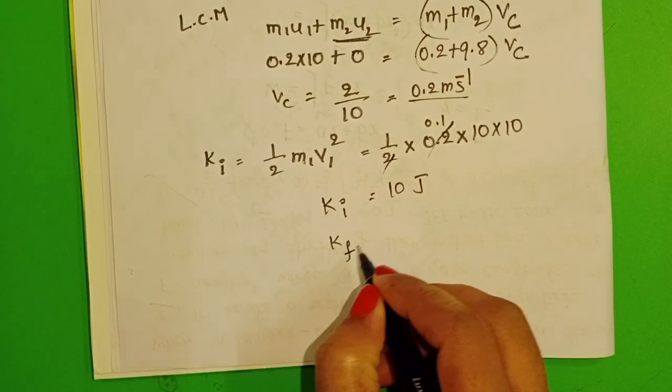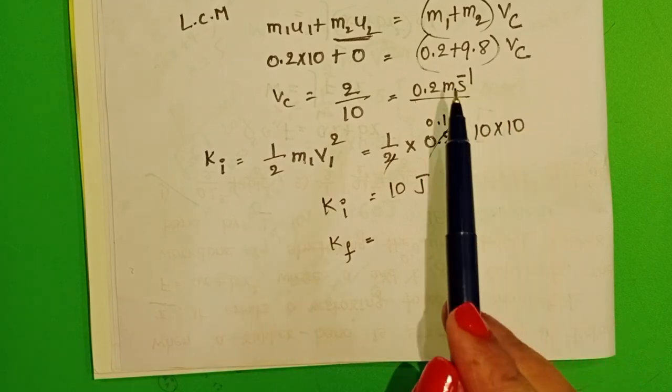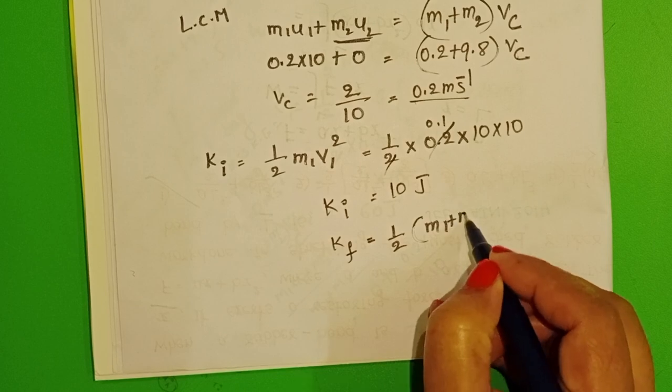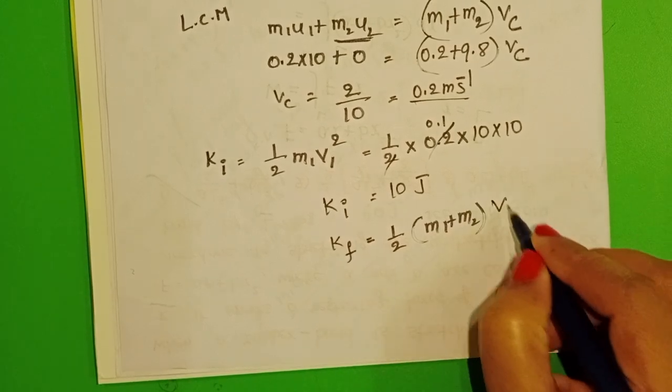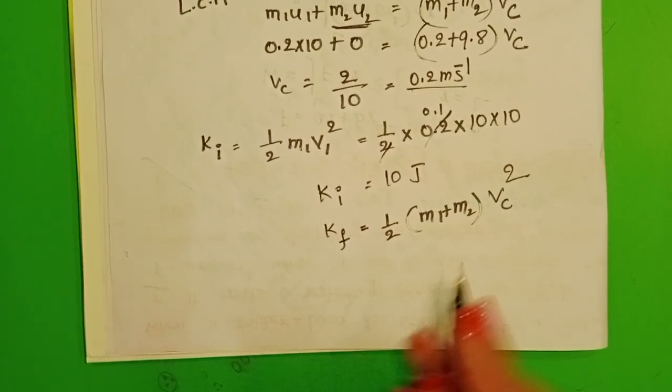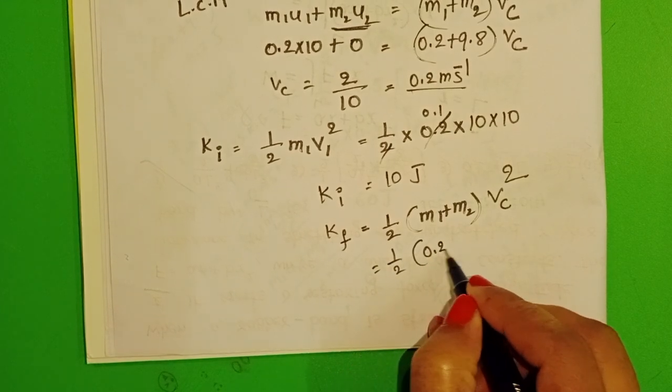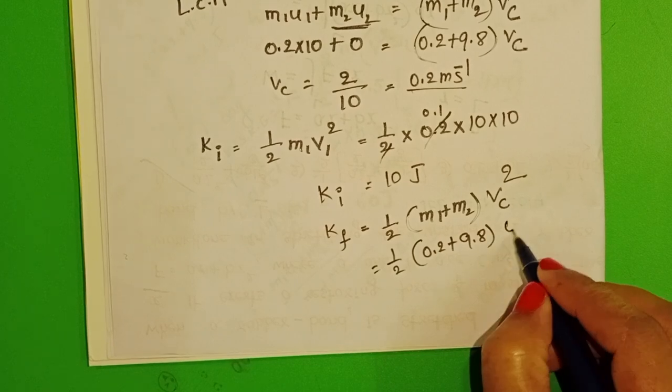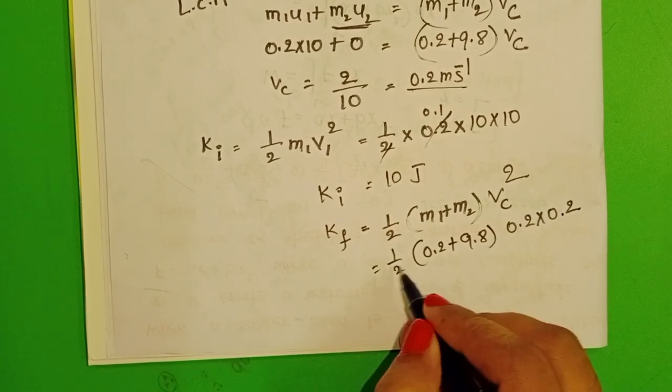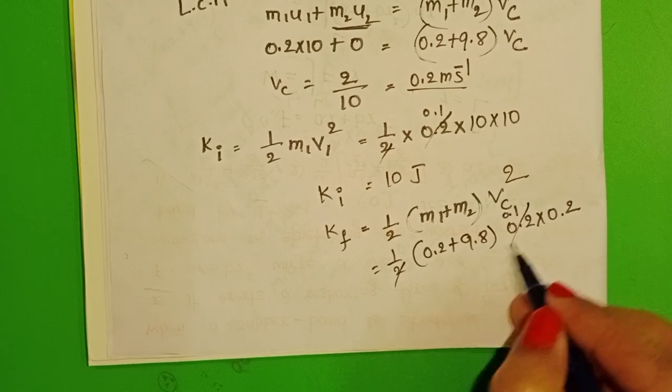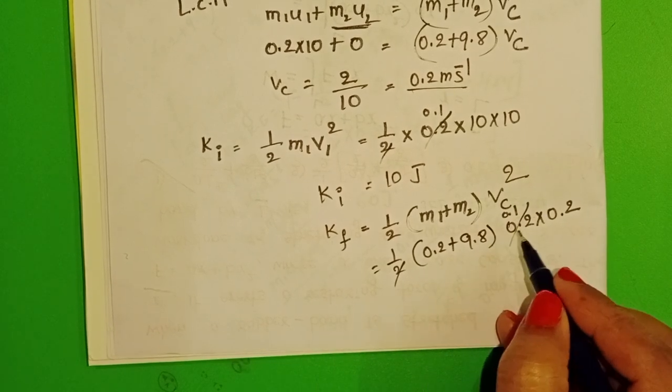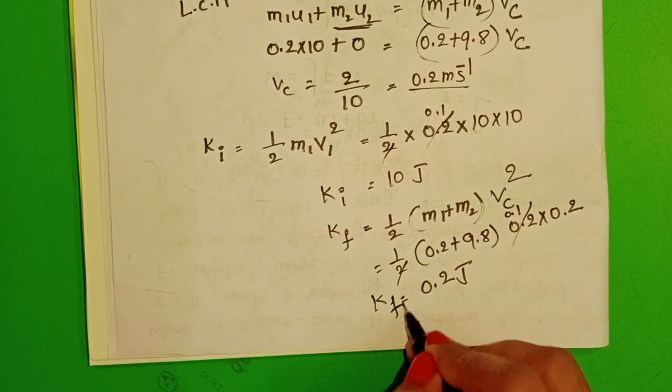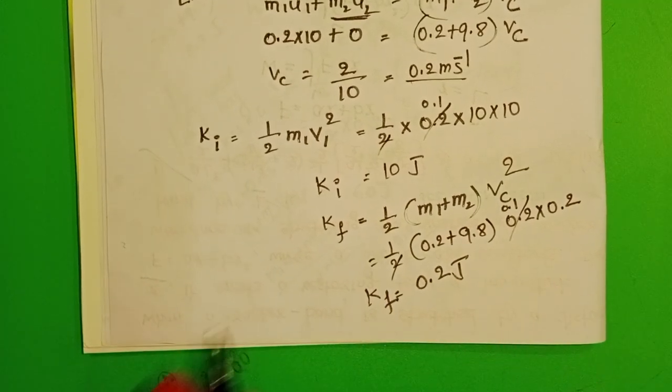Final kinetic energy is due to the sand bag and bullet. In place of mass, take M1 plus M2, and in place of velocity, take the common velocity. Half into 0.2 plus 9.8 into 0.2 into 0.2. That's 10 into 0.04, which equals 0.2 joules. This is final kinetic energy.